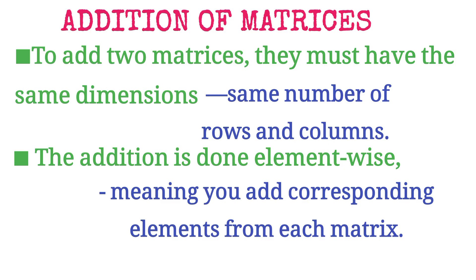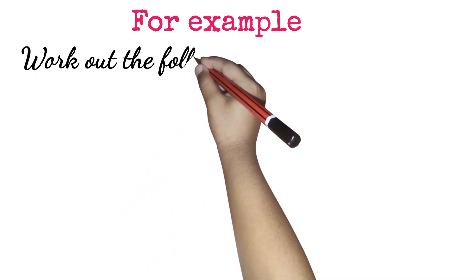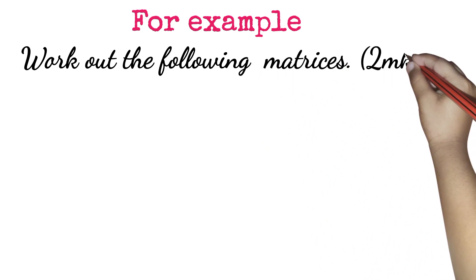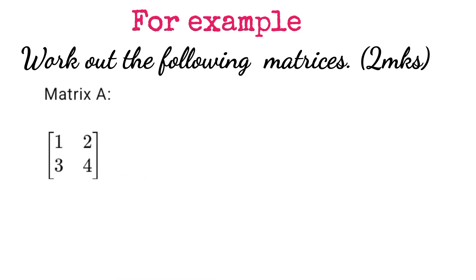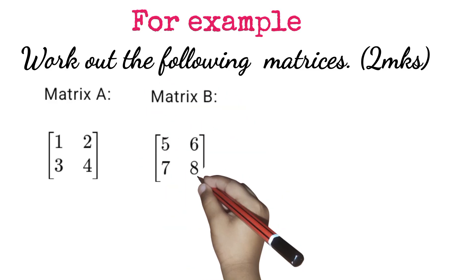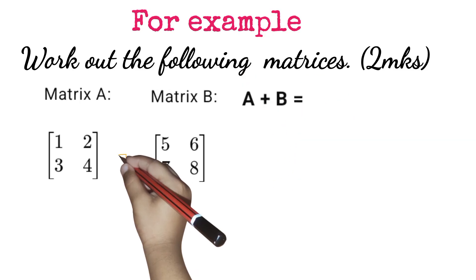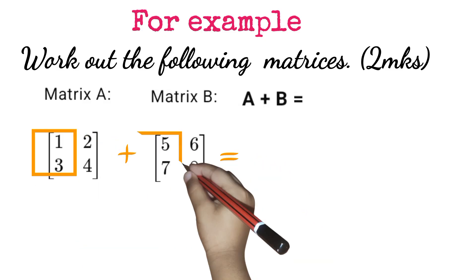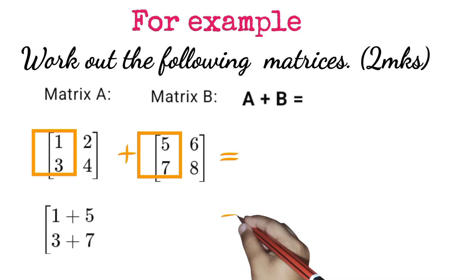For example, look at this example here. Work out the following matrices, two marks. We have matrix A and matrix B. We are being told to add A to B. As we have said, we add corresponding elements. So this is 1 plus 5 to give 6, and 3 plus 7 to give 10.